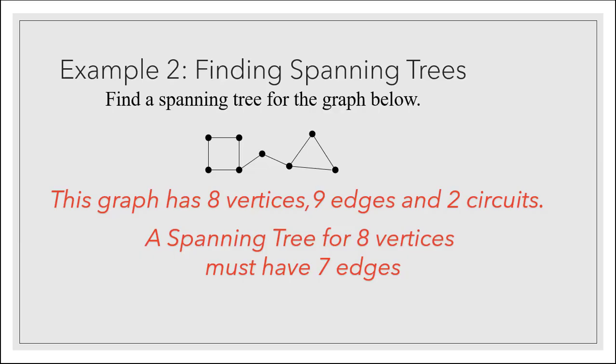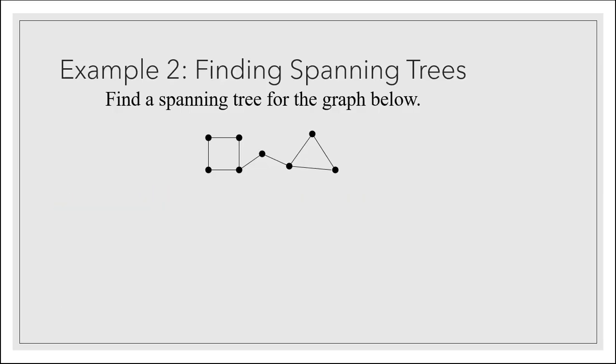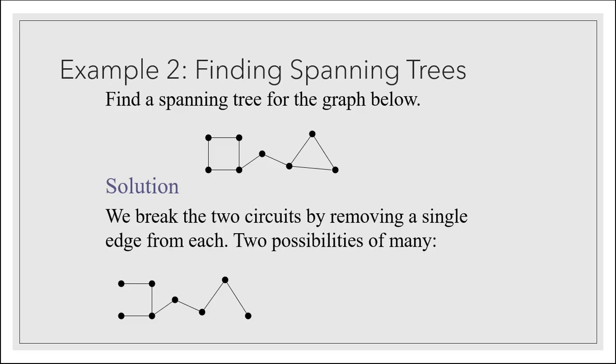And we know that trees don't have any circuits, so we must remove two edges and break up those two circuits, the square circuit and the triangular one. There are many possibilities for doing this. One of them would be to remove the far left and bottom right edge from the graph, effectively breaking the two circuits and bringing us down to seven edges. But we could have also possibly removed the right side of the square and the right side of the triangle. These are just two of many possibilities. So either of these would represent a correct answer to the question.